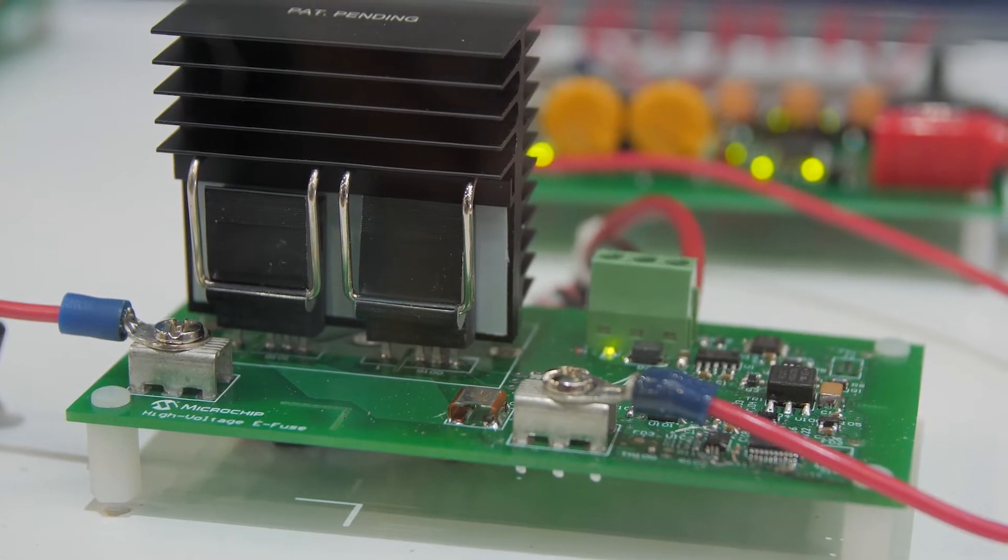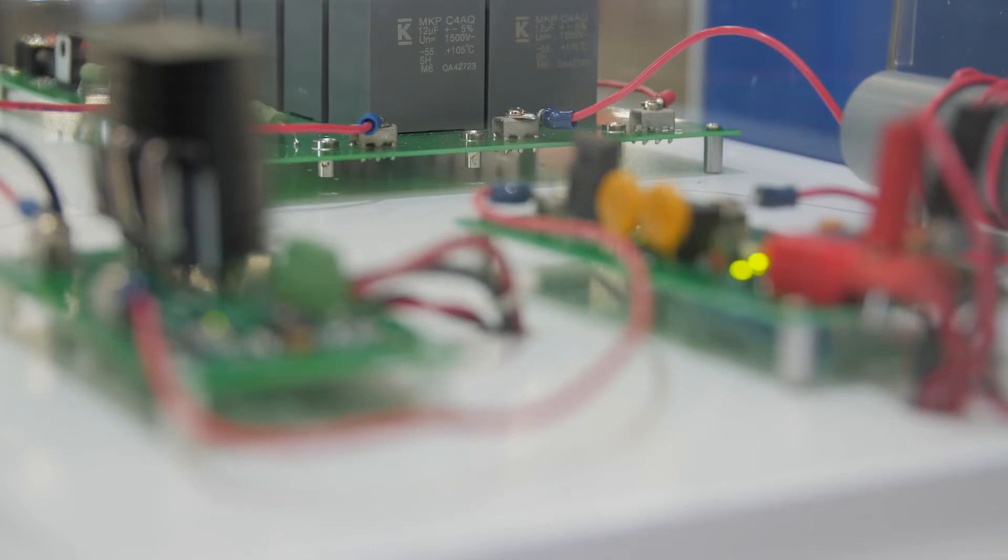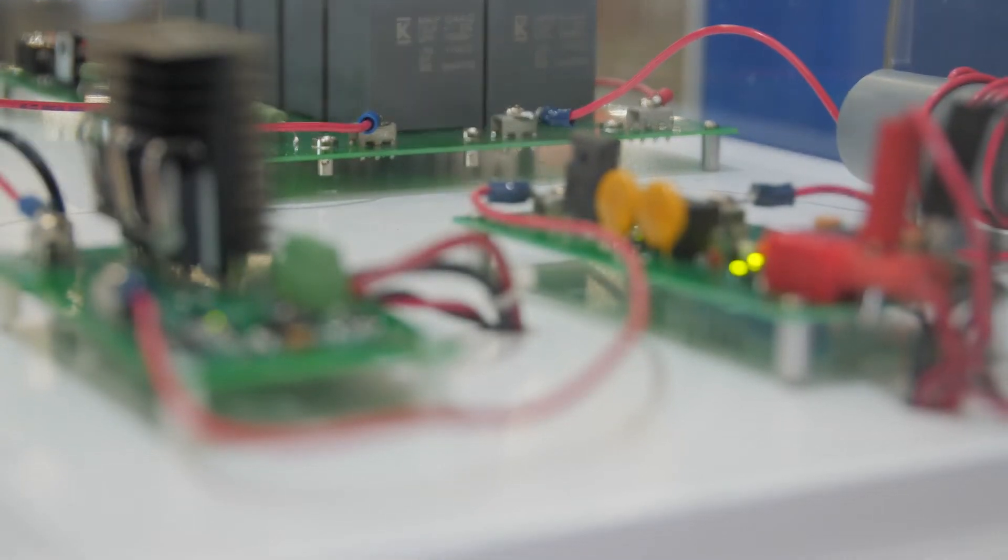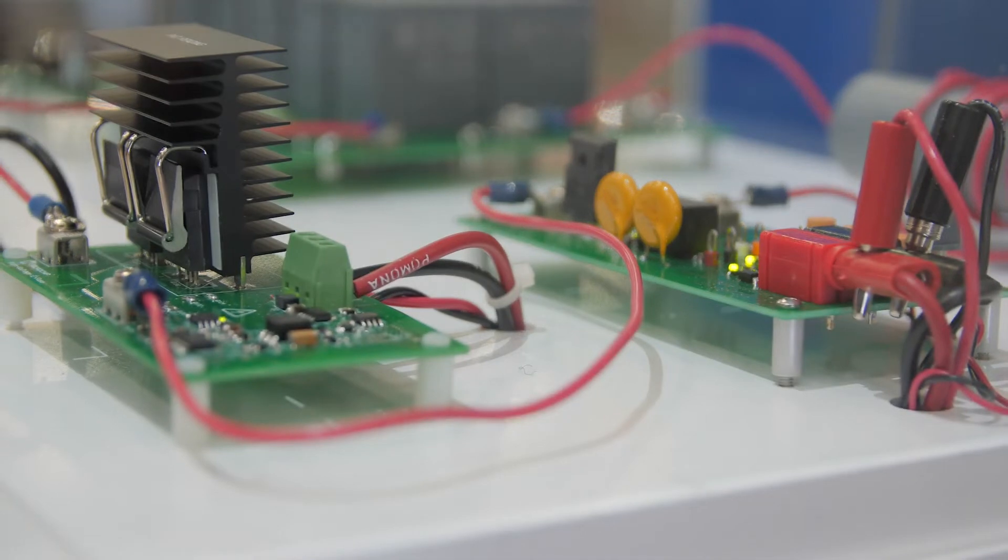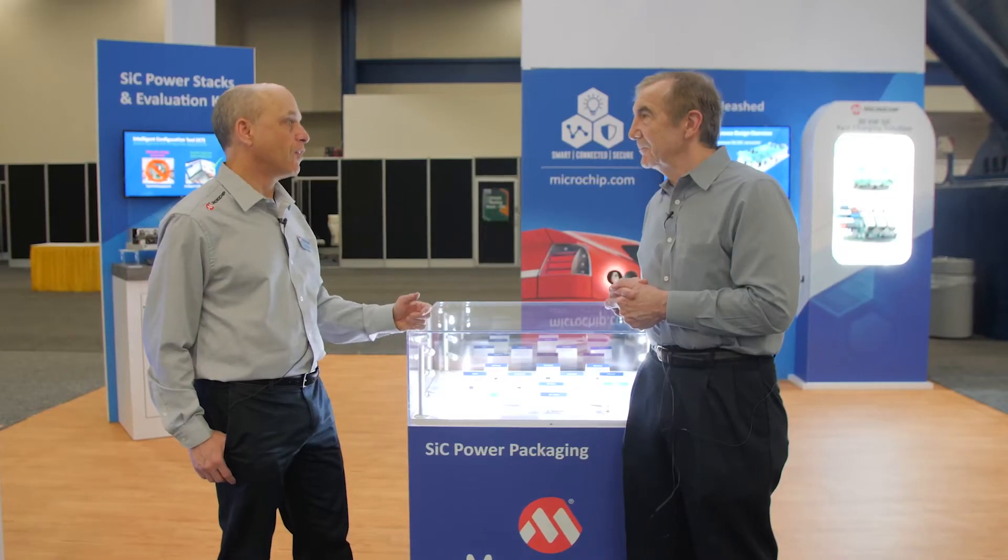So just this week, we introduced a new voltage class, 3.3 kV. Now we offer silicon carbide from 700 volts to 3300 volts, 3.3 kV, and a wide range of current ratings as well on both SiC diodes and MOSFETs.